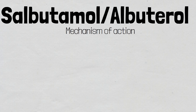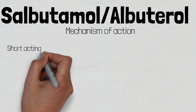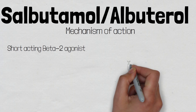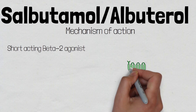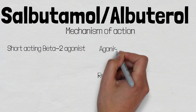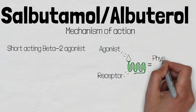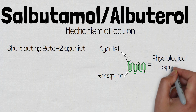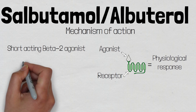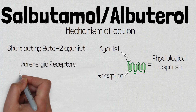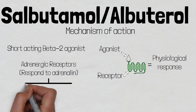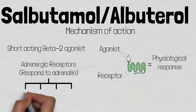Salbutamol is a short-acting beta-2 agonist, and an agonist is something which initiates a physiological response when bound to a receptor. Salbutamol selectively binds to beta-2 receptors. A beta-2 receptor is a subgroup of adrenergic receptor, meaning receptors which bind adrenaline and noradrenaline.